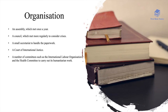The organisation itself had an assembly which met once a year, a council which met more regularly to consider crises, a small secretariat to handle the paperwork, a court of international justice, and a number of committees such as the International Labour Organisation and the health committee to carry out its humanitarian work.